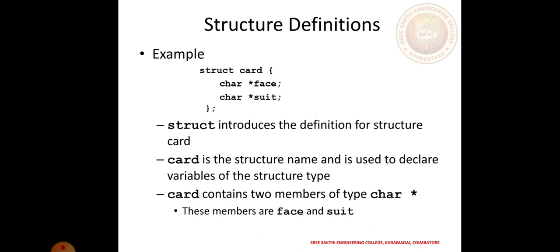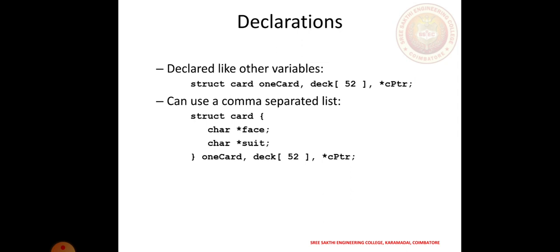An example is: struct card { char *face; char *suit; }; Here, struct introduces the definition of a struct card. The name 'card' is a struct tag used to declare variables of the struct type. A card contains two char pointer members: face and suit. Declarations look like: struct card oneCard, deck[52], *cptr; or defined with the struct body followed by oneCard, deck[52], *cptr.